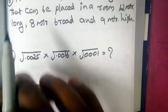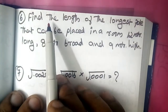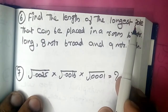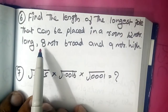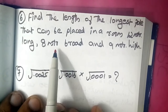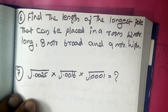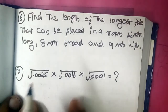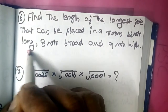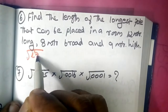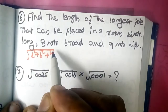Here, question number 6: Find the length of the longest pole that can be placed in a room 12m long, 8m broad and 9m high. This is the theorem that we have to use. The formula is root of L² plus B² plus H².